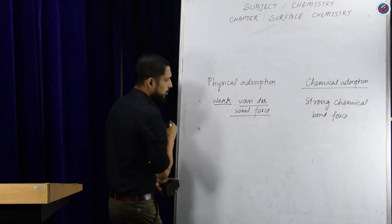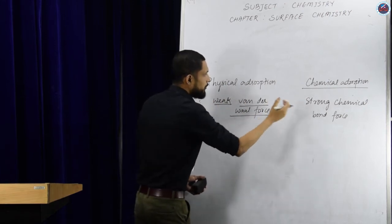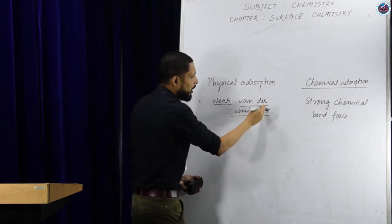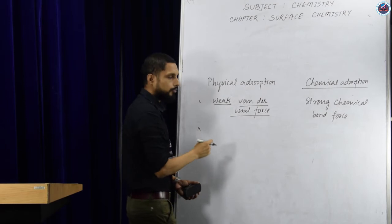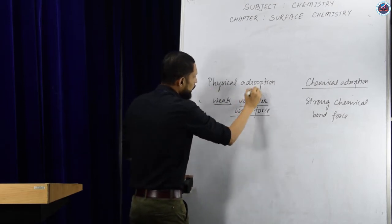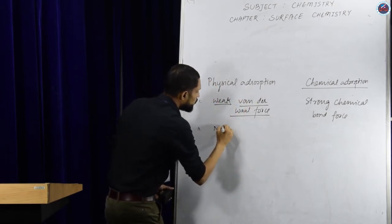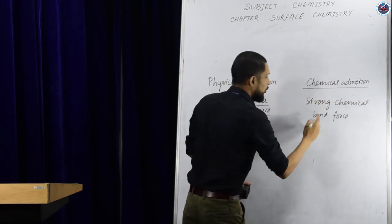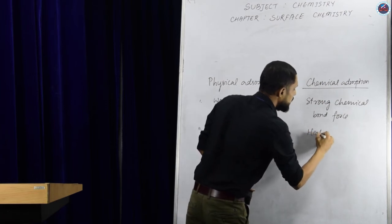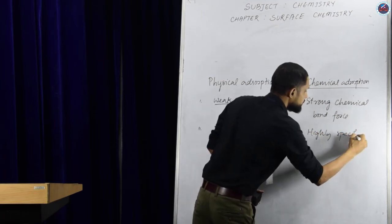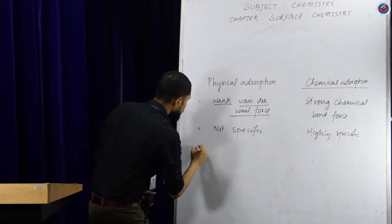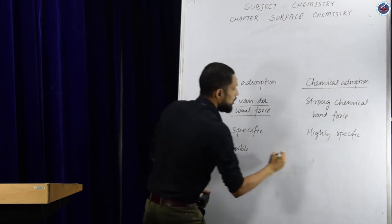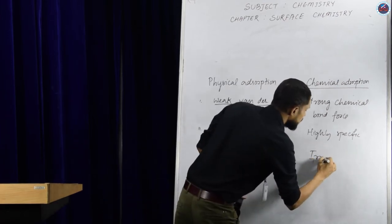There are more differences between physical and chemical adsorption. First: physical adsorption involves weak van der Waals force, while chemical adsorption involves strong chemical bond force. Second: physical adsorption is non-specific, whereas chemical adsorption is highly specific. Third: physical adsorption is reversible, whereas chemical adsorption is irreversible.